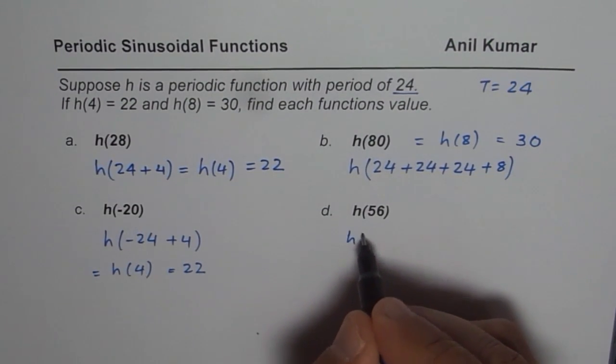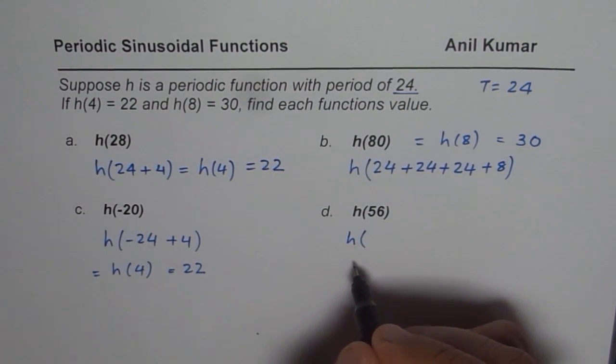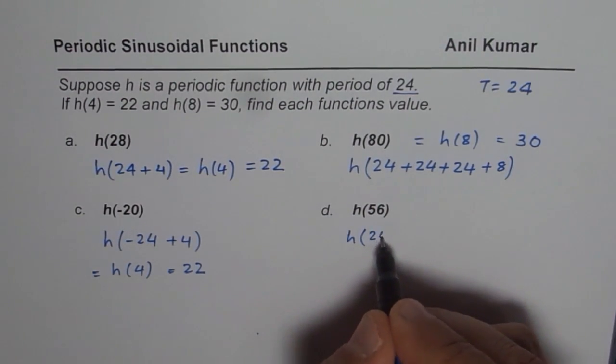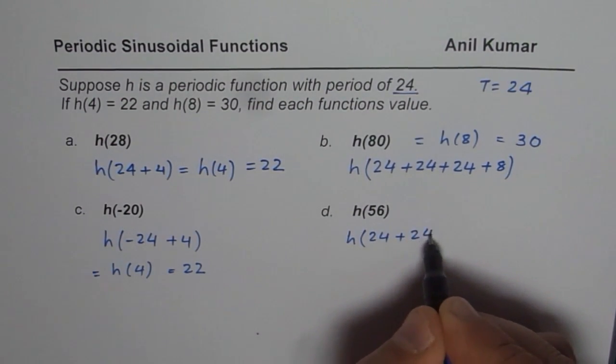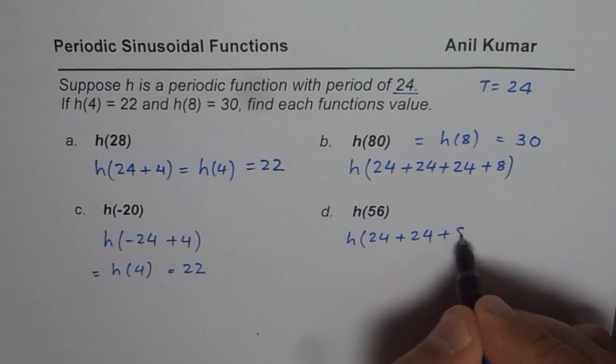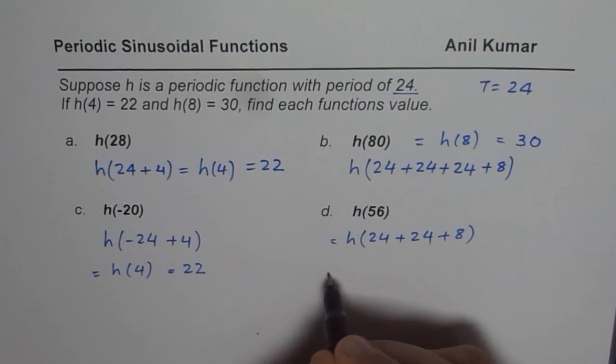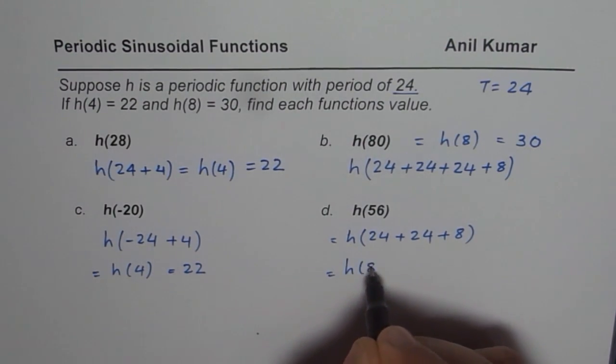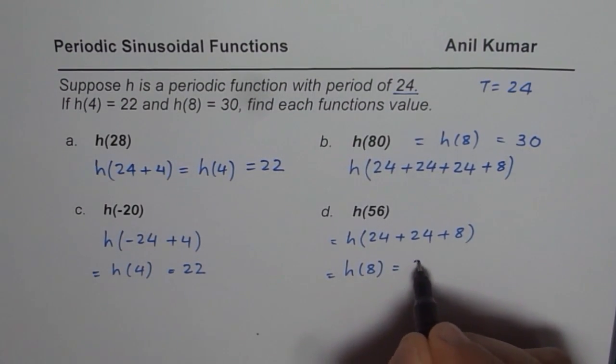56. So 56 you could get by combinations of 24, which is 24 plus 24 is 48. 48 plus 8 is 56. So this equals H(8). Is it okay? So H(8) is 30.